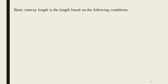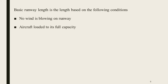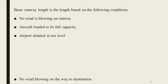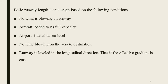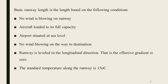Basic runway length is a standard length defined under specific conditions. The conditions are: first, no wind is blowing on the runway; second, the aircraft is loaded to its full capacity; third, the airport is situated at sea level; fourth, no wind is blowing on the way to the destination; fifth, the runway is leveled in the longitudinal direction — that is, the effective gradient is zero; sixth, the standard temperature along the runway is 15 degrees Celsius. These conditions define the basic runway length.